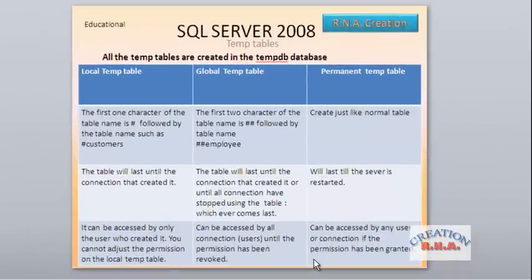In this video, I am going to talk about SQL Server 2008 and the temp tables that you can create in SQL Server. You create temp tables only in the tempdb database, which is one of the system databases. As you can see on the screen, you can create three types of temp table: local temp table, global temp table, and permanent temp table. Let's examine one by one what these are and what they stand for.